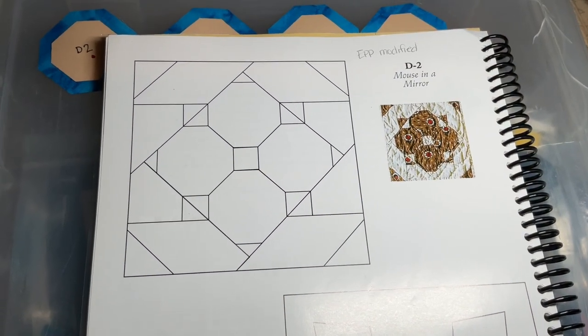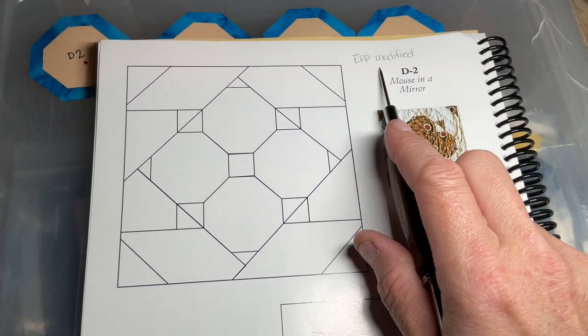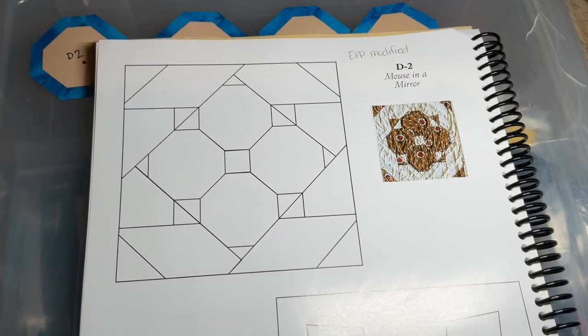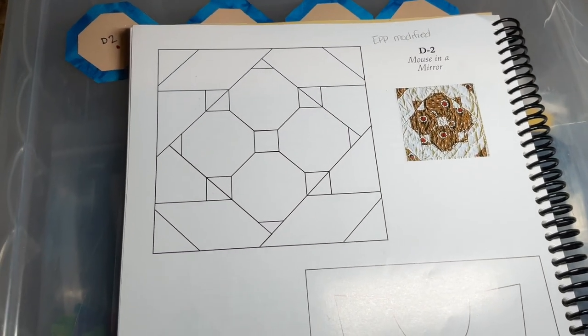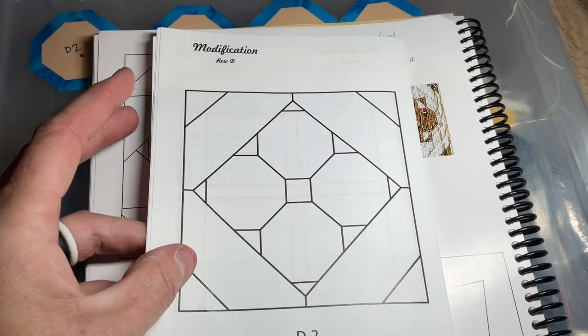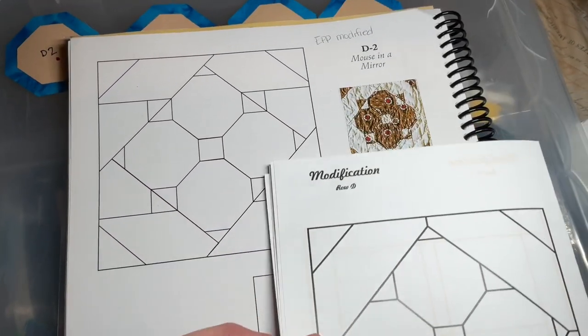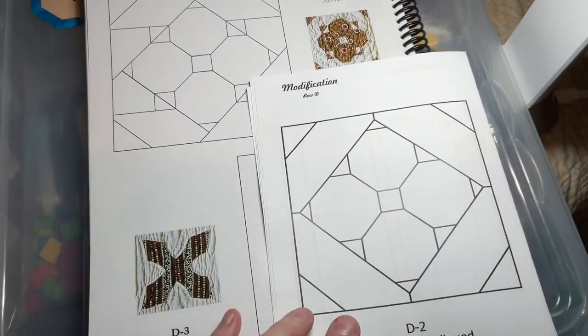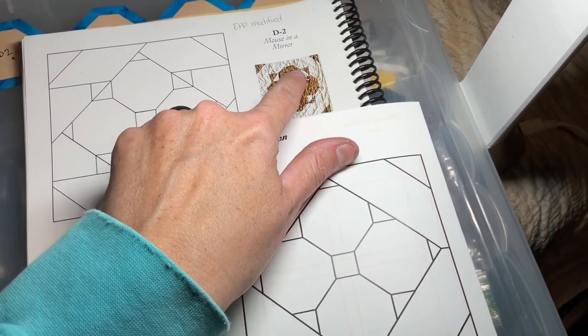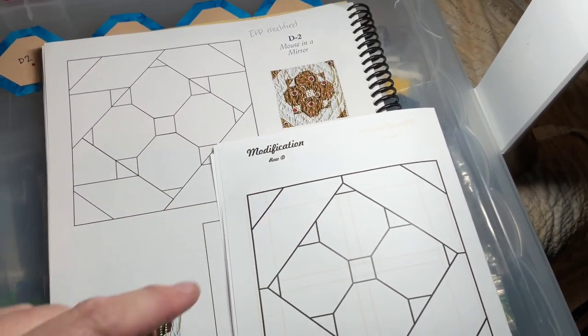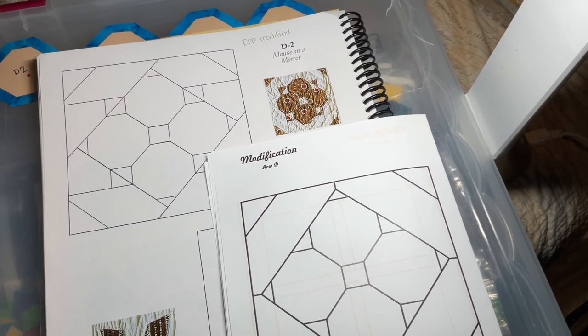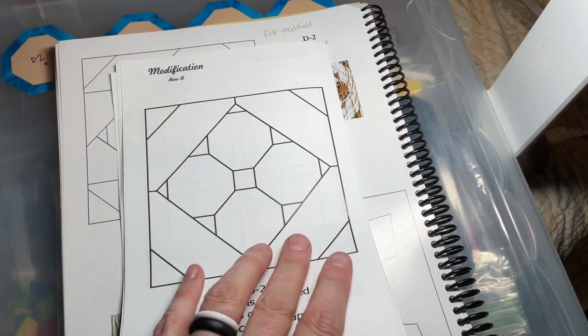Next is D2. D2 is once again a modified block. So we're going to look at the booklet that came with the kit. And this is what we see. It's essentially the same block, there's just a couple of differences. Like there's the triangles here and the corners aren't there, and the assembly is a little different.